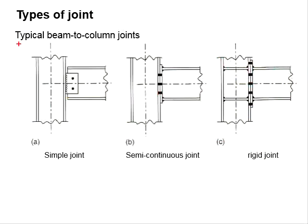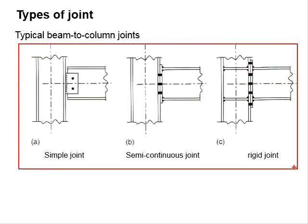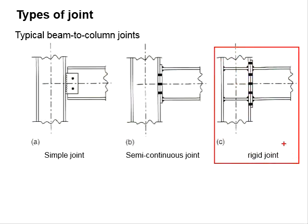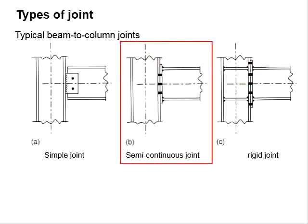These three types of joints differ with each other in terms of the rigidity and the moment-resisting ability. The simple joint normally provides very minimum moment resistance, while the rigid joint provides high degree of moment resistance. The semi-rigid joint will be intermediate of the two joints.